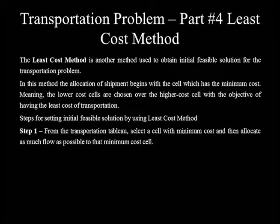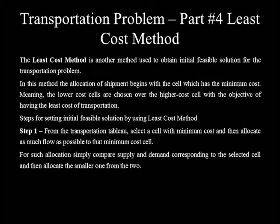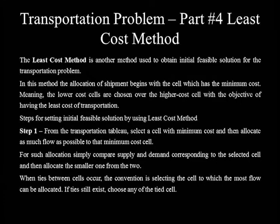Step 1: From the transportation table, select a cell with minimum cost and allocate as much flow as possible to that minimum cost cell. Compare supply and demand corresponding to the selected cell and allocate the smaller of the two. When ties occur — meaning two or more cells have the same least cost — the convention is to select the cell which can receive the most flow. If ties still exist, choose any one of the tied cells.